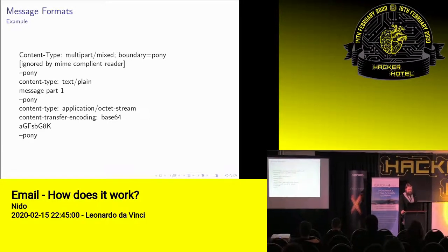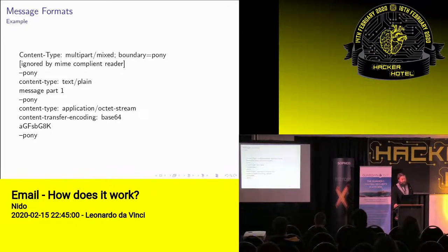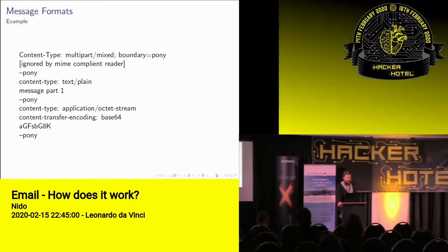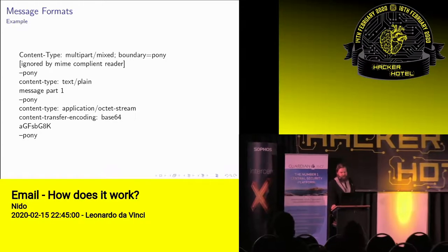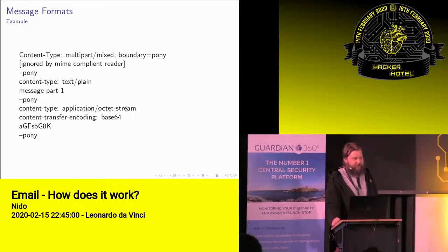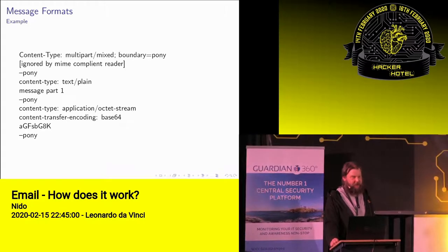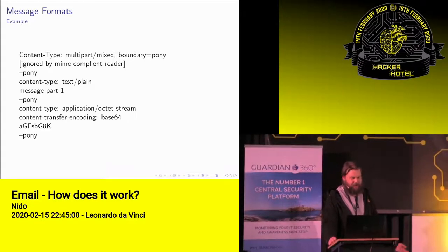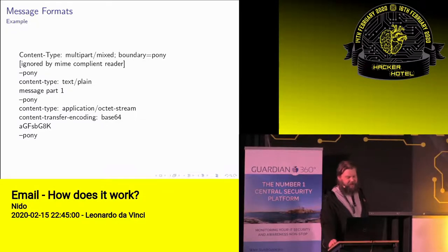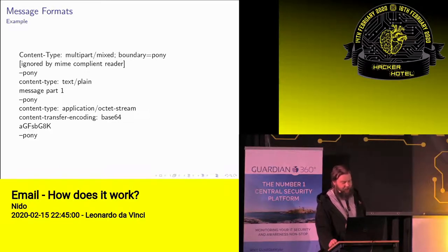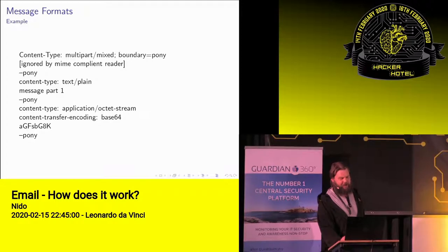I've also included in this message a second part, which is of the content-type application/octet-stream, which basically means a bunch of bytes. I've also added a content-transfer-encoding, because if you want to send arbitrary bytes, arbitrary bytes are not defined in US ASCII, so you need a way to encode it so it actually fits in US ASCII. In this case it uses base64, and then there's a base64-encoded message, which if you decode it happens to say 'hello'. Don't forget to add your last boundary at the end of your message, or else it will probably not be received or read.